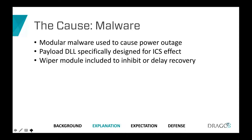Unlike the 2015 incident where an operator had to be on keyboard moving a mouse somewhere else in the world, the 2016 impact was the malware itself. The malware is able to interact with RTUs directly using only a configuration file, without a human in the loop. In our investigation, we found this malware to be quite modular — principally a payload DLL specifically designed to create the intended ICS effect, paired with a wiper module to inhibit or make impossible recovery of the ICS system and therefore the power grid.